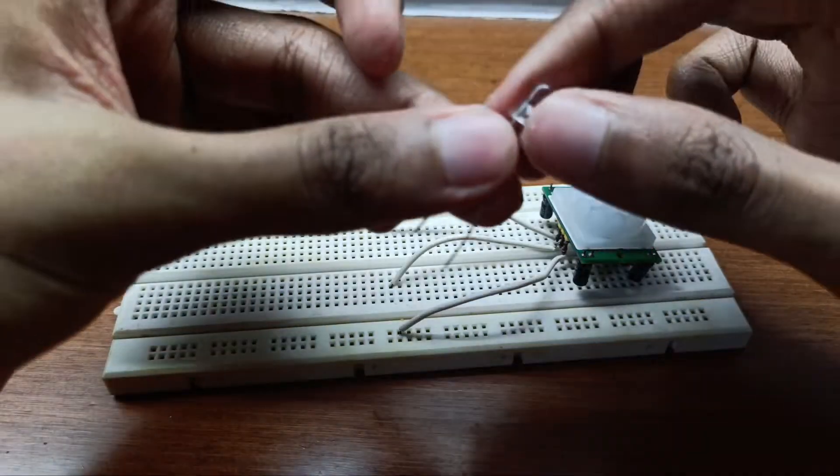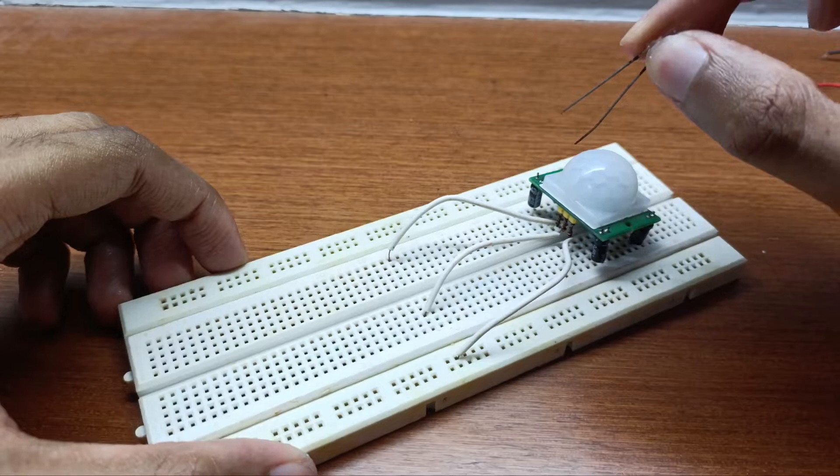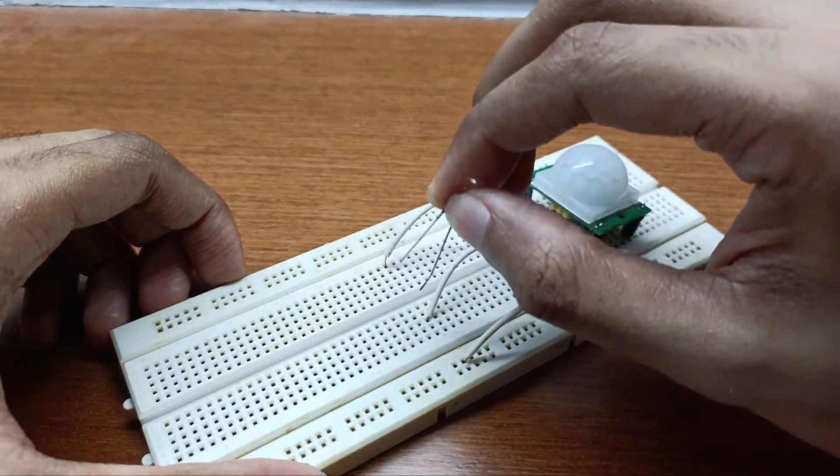Now connect the anode which is the positive side of the LED to the center pin of the PIR sensor which is the output.